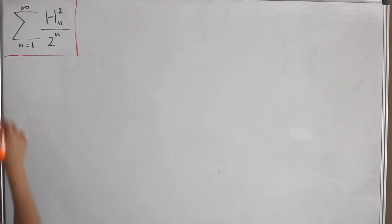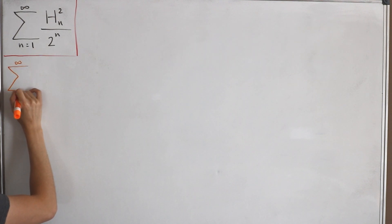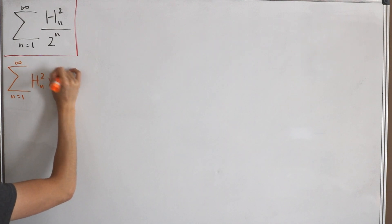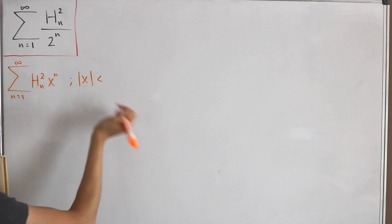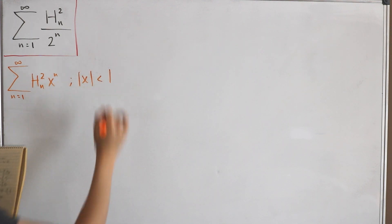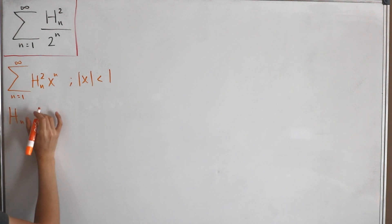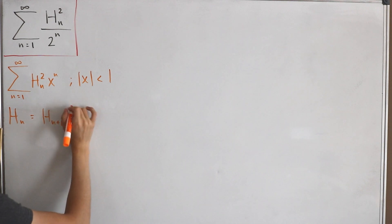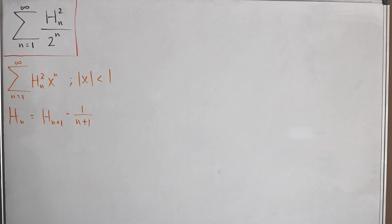Let's start with specifically the generating function for the squares of harmonic numbers. We consider the series Σ H_n² · xⁿ, and this applies for |x| < 1. We'll use the recurrence relation: H_n = H_{n+1} − 1/(n+1). There's no proof needed here — you can verify it just by definition, plugging in numbers one at a time.